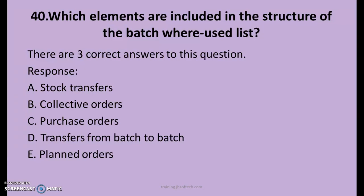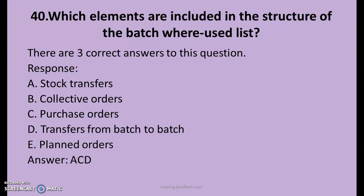40th question. Which elements are included in the structure of the batch where-used list? There are three correct answers. A. Stock Transfers, B. Collective Orders, C. Purchase Orders, D. Transfers from Batch to Batch, E. Plan Orders. The right answers are A, C and D: Stock Transfers, Purchase Orders, and Transfers from Batch to Batch.